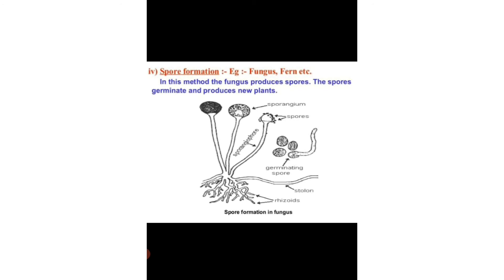Next we have spore formation. For example, fungus, fern, etc. In this method, the fungus produces spores. The spores germinate and produce new plants.